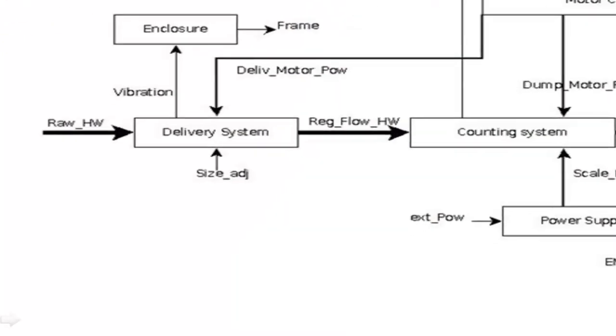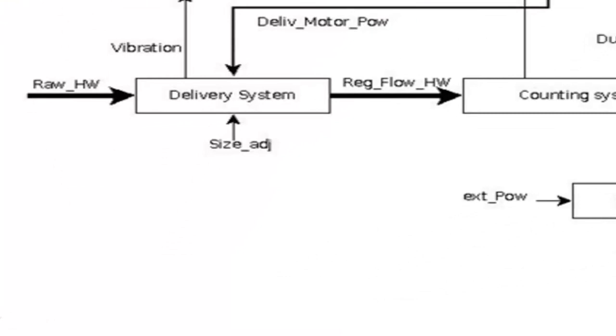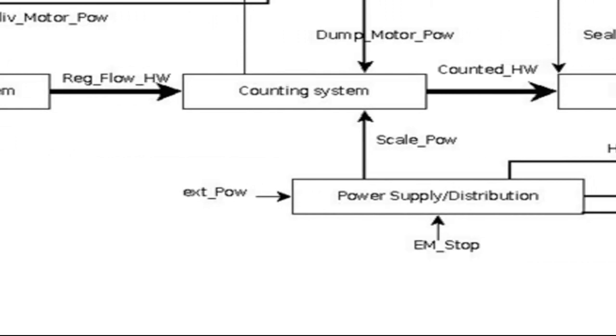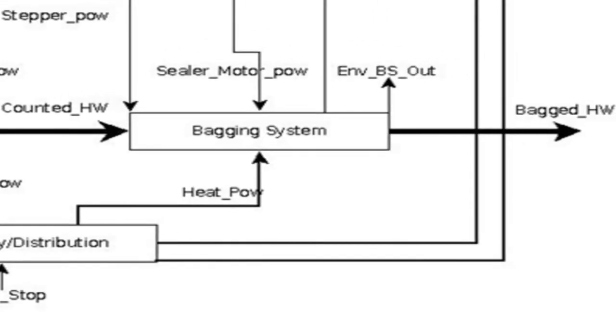This is our block level diagram. The delivery system takes in pre-sorted hardware that is loaded into the top of the machine. It then delivers the regulated flow of hardware to the counting system. The counting system is where the hardware is weighed. Once the hardware is weighed, it is then dumped into the bagging system where it is sealed.